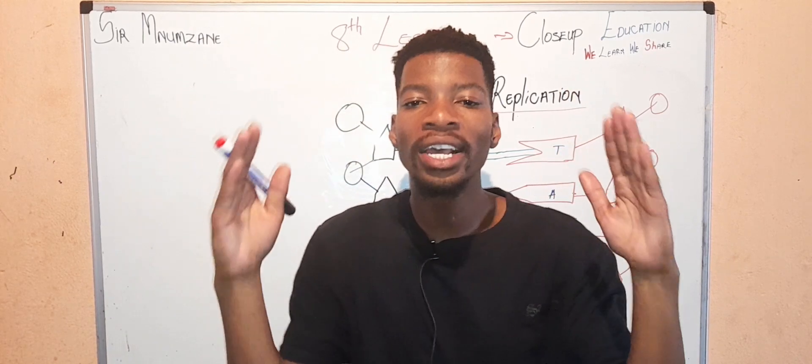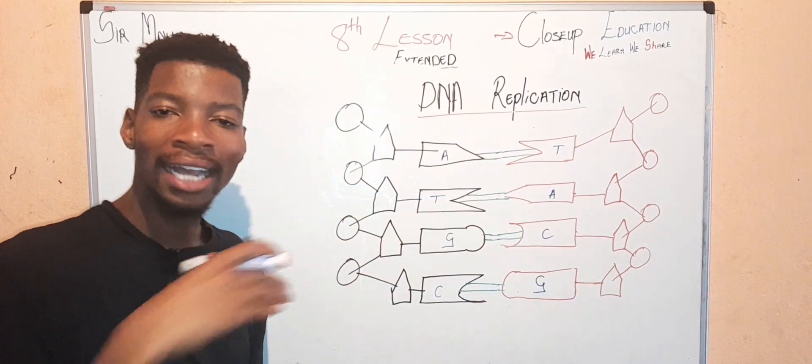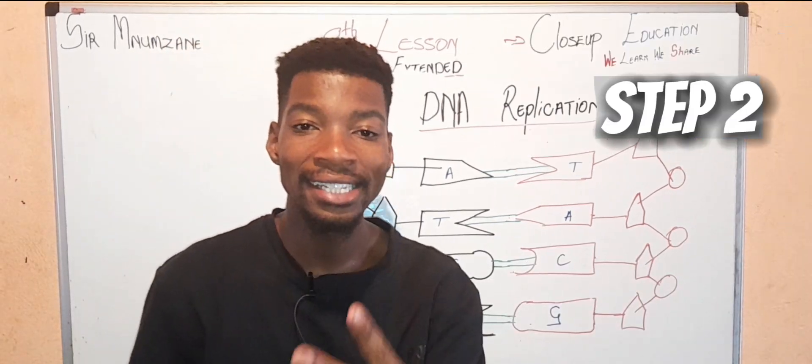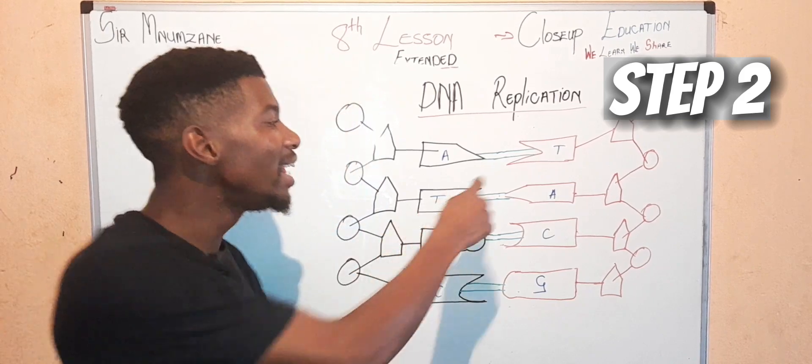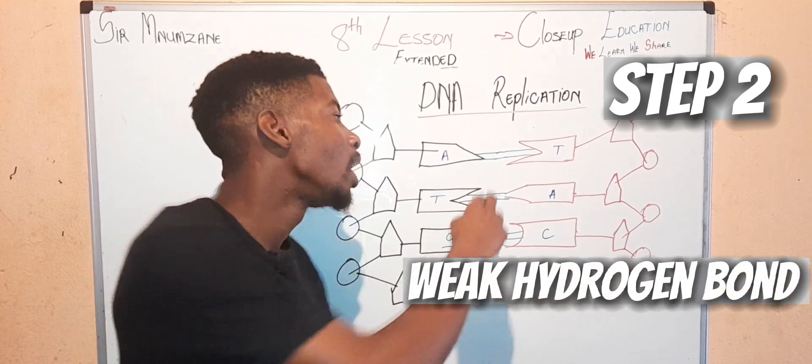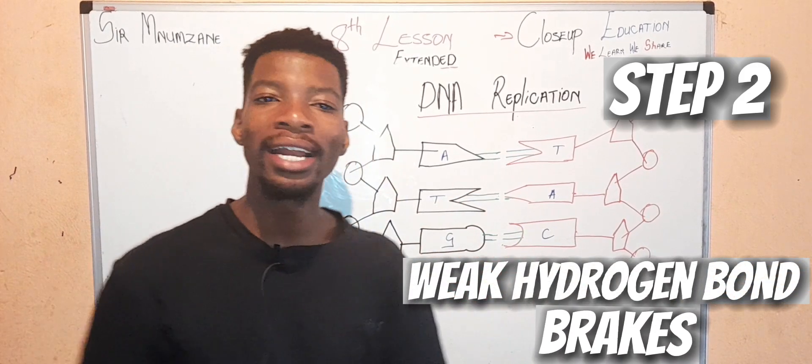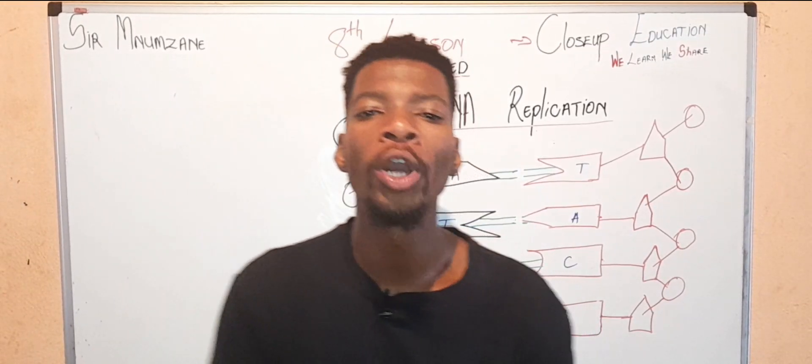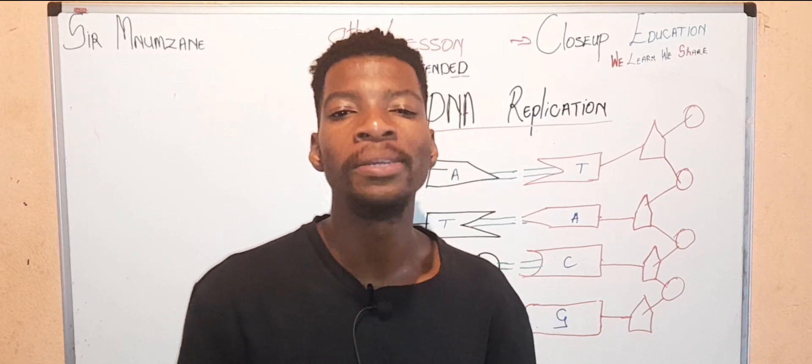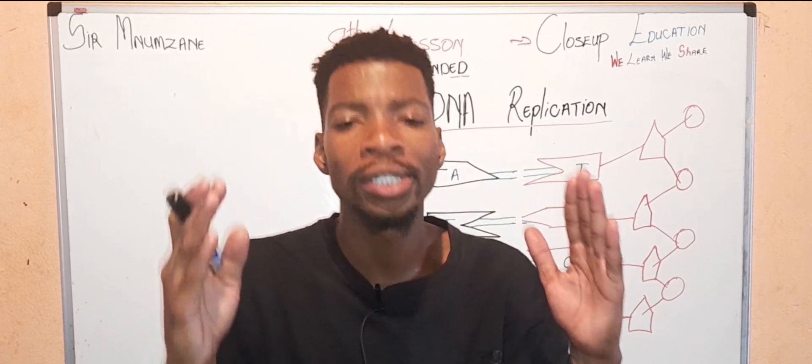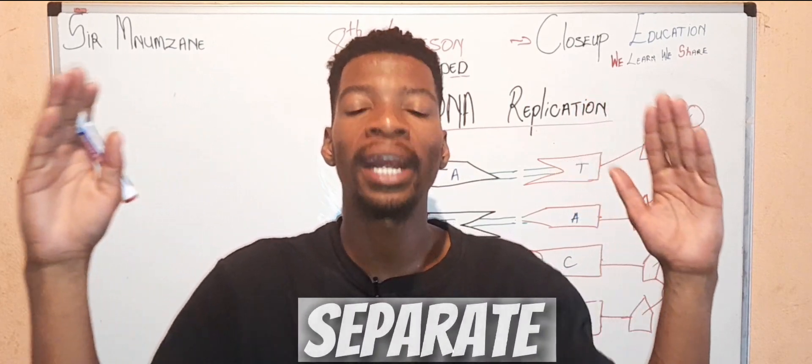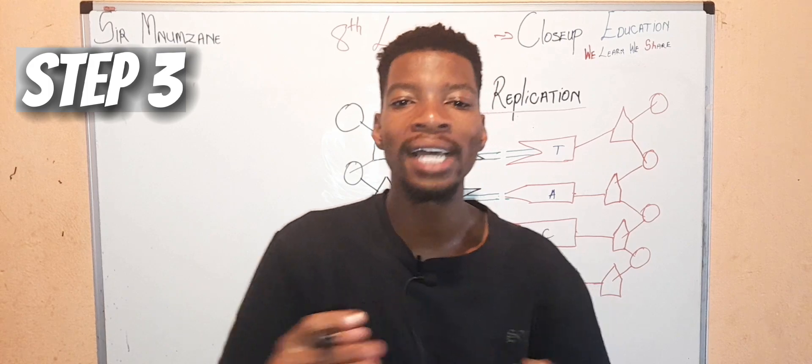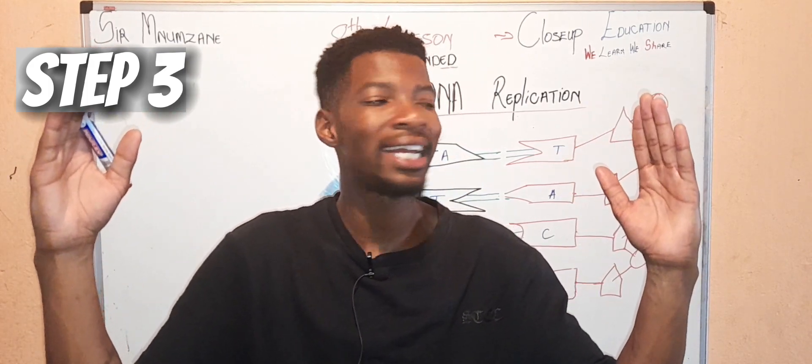Once it has been unwound, it will look like the DNA structure which I just drew here. The second step on DNA replication is that these weak hydrogen bonds will break. The weak hydrogen bonds will break, and after the weak hydrogen bonds have broken, that will obviously mean the DNA molecule or strand will unzip or separate. That is the second step. Then the third step is that when they have separated, both of these original DNA molecules will act as templates.